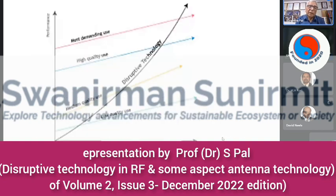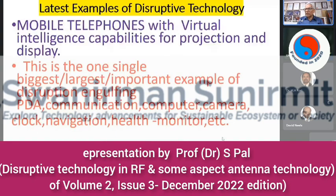If the top represents the most demanding use, then high quality use, then medium quality use, and low quality use — these are for any existing technology. But when disruptive technology takes place, it supersedes everything and goes exponentially. The most popular example of disruptive technologies is the mobile telephone, with virtual intelligence capabilities for projection and display. This is the single most important example of disruption — engulfing PDA, communication, computer, camera, clock, navigation, health monitor, and so on.